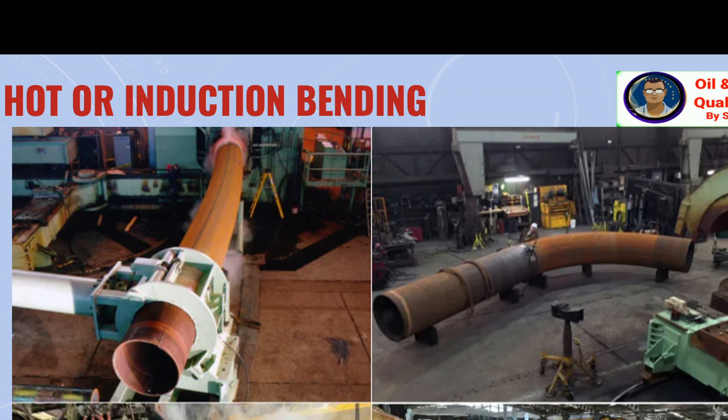By adjusting the radius arm and front clamp, the required bend radius can be fixed. There is one pointer to display the correct degree of turning. Arc lengths are marked on the pipe. The pipe can be moved slowly whilst the bending force is applied by a fixed radius arm arrangement.